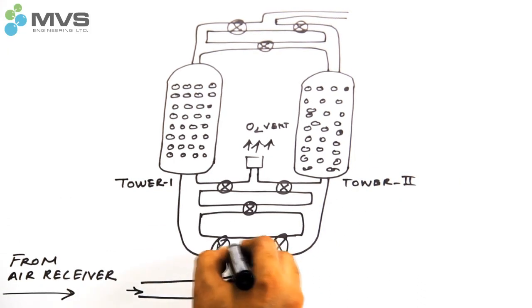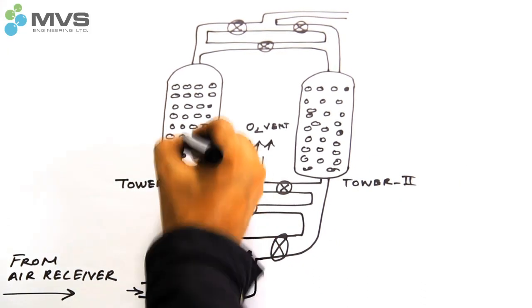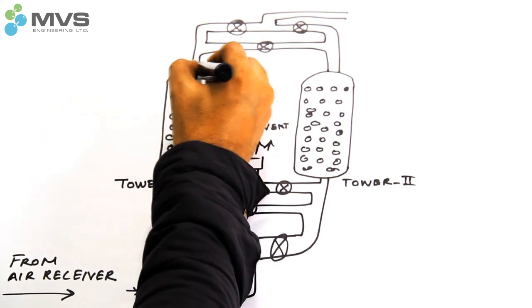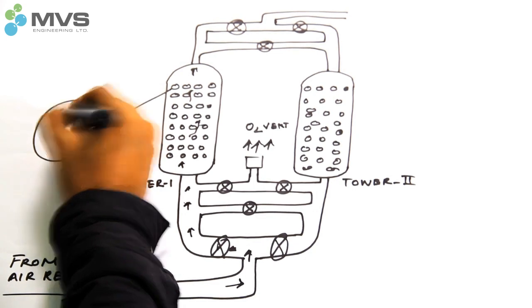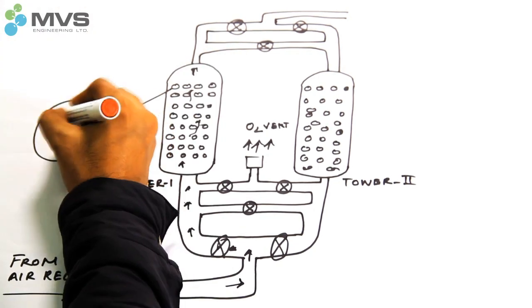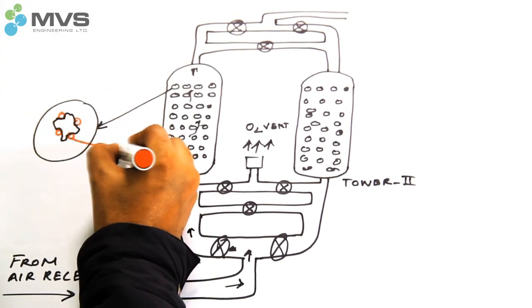PSA technology comprises two molecular sieve-filled towers. Compressed air is passed through tower 1. This compressed air pressurizes the tower. Oxygen molecules are smaller in size and get trapped within the pores of the molecular sieves.